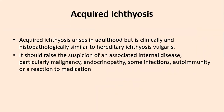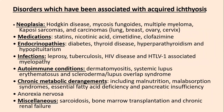The first disease is acquired ichthyosis. Acquired ichthyosis arises in adulthood but is clinically and histopathologically similar to hereditary ichthyosis vulgaris. It is called acquired because it is not genetic and not present since birth — it is acquired in childhood or adulthood. It should raise the suspicion of associated internal disease, particularly a malignancy, an endocrinopathy, some chronic infection, autoimmunity, or a reaction to medication.